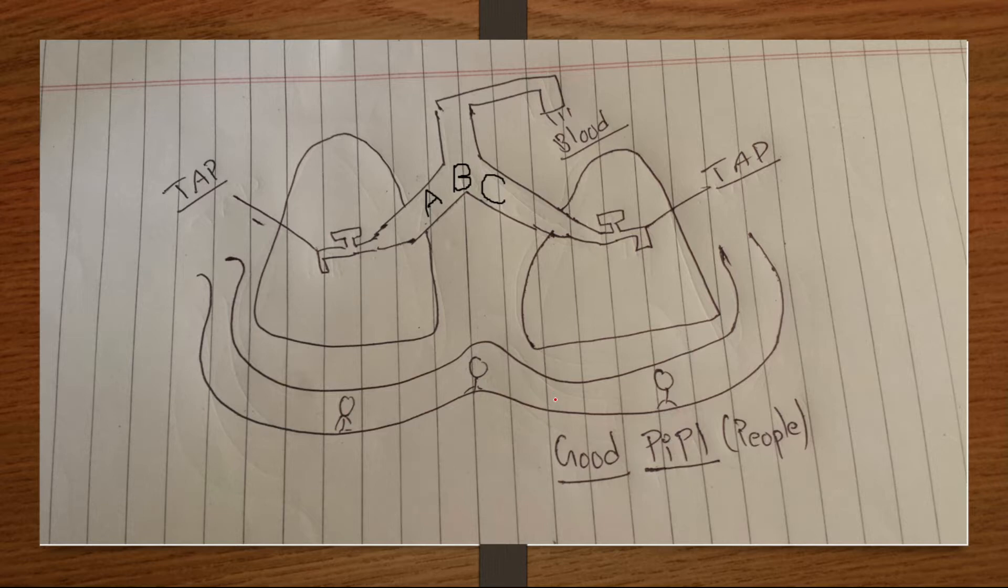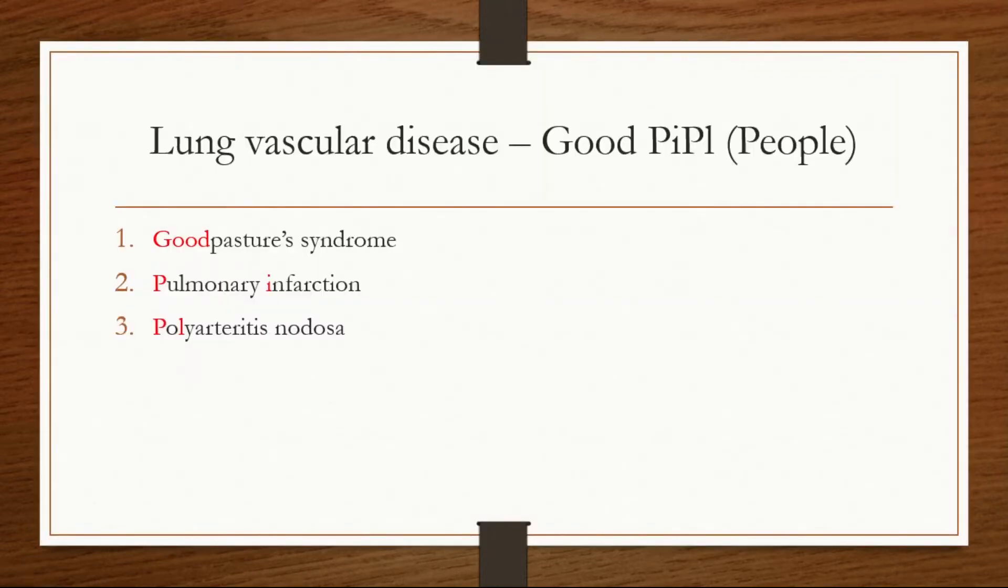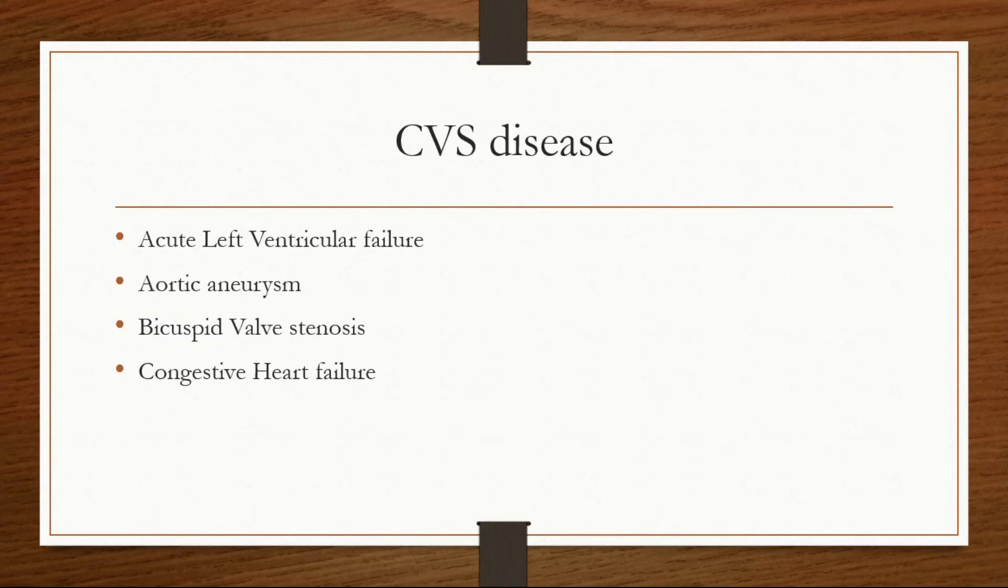And as I said, this is a road around the factory and there are good people walking around this road. So this road refers to the blood vessels related to the lung, and 'good people' is actually the mnemonic to remember the lung vascular disease. So 'Good' for Goodpasture syndrome, 'PI' for pulmonary infarction, and 'PL' for polyarteritis nodosa. I didn't make any mnemonics to remember these serious causes because I felt there is no need of it.